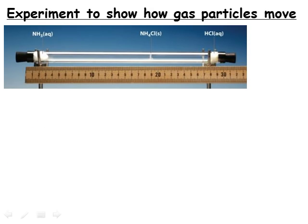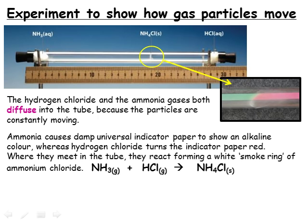Diffusion experiments can also provide evidence that gas particles are in constant, random motion. Cotton wool soaked in concentrated ammonia solution and concentrated hydrochloric acid solution are placed at either end of a glass tube. Molecules of ammonia vapour start to diffuse down the tube from one end, while molecules of hydrogen chloride vapour start to diffuse from the opposite direction. Where the two gases meet, they react, forming a white ring of ammonium chloride particles in the air. This can be visualised using a strip of universal indicator paper down the tube, since ammonia is a base and turns the indicator paper blue-green, while hydrogen chloride is an acid and turns the indicator paper red. Where the two gases meet and a neutralisation reaction occurs, the indicator paper shows a narrow band of its neutral colour, at the same point where the smoke ring of ammonium chloride is forming.